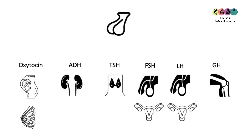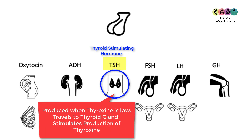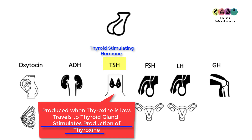The next hormone is thyroid stimulating hormone — really important. It is produced when thyroxine levels are low. Thyroxine is a hormone produced in the thyroid gland, and when its levels get low, thyroid stimulating hormone is produced and secreted by the pituitary gland. It then travels to the thyroid gland, where it stimulates it to make more thyroxine.